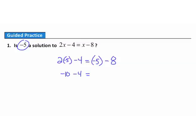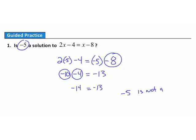On the right, I think of the subtraction as addition: negative 5 plus negative 8 gives me negative 13. Back on the left, negative 10 plus negative 4 gives me negative 14. So I have the statement negative 14 equals negative 13 — that is not a true statement. Therefore, negative 5 is not a solution.